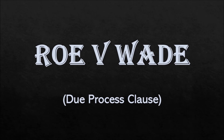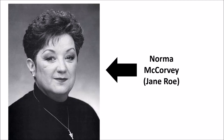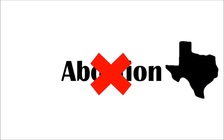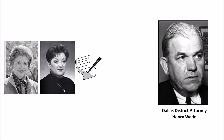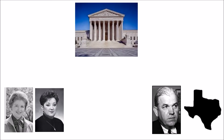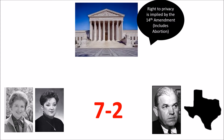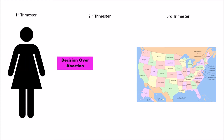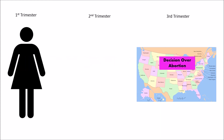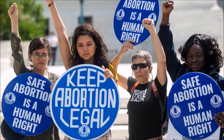Next is Roe v. Wade, which also uses the due process clause. Norma McCorvey, using the legal pseudonym Jane Roe, wanted to have an abortion, but abortions were illegal under Texas law unless they threatened the life of the mother. Lawyer Sarah Weddington teamed up with Norma to file a lawsuit against Dallas District Attorney Henry Wade. The Supreme Court ruled seven to two with Jane Roe, finding an implied right to privacy in the 14th Amendment that made abortion legal. The decision was split by trimesters: the first is completely the mother's choice, the second allows states to restrict but not outlaw it, and in the third states have the freedom to ban it.